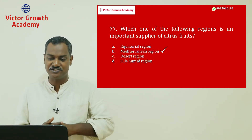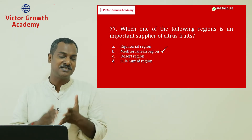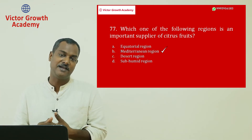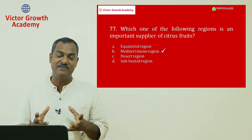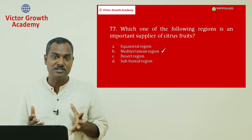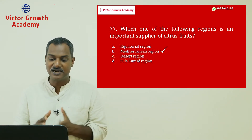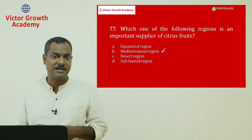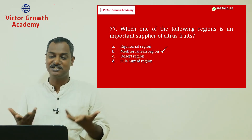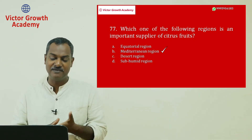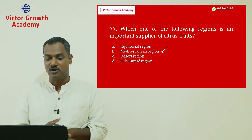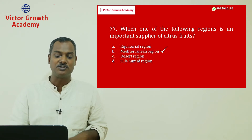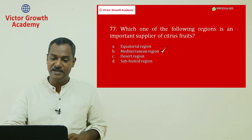Mediterranean climate is found around the Mediterranean Sea and the western parts of continents. The sub-humid region is also not the answer. As soon as you see 'citrus fruit,' the answer is Mediterranean climate. Question 77 answer is B: Mediterranean climate.